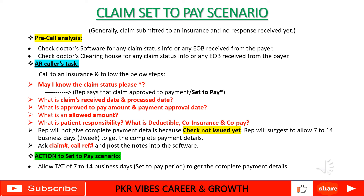In that case, take your claim number and call reference number, and put all the information given by the representative into your AR comments. Post those notes into your respective software. Note: in this scenario, partial payment information will be given by the insurance representative — not complete payment details. The action is to allow 14 to 15 days depending on the payer, then follow up on the claim, or you will receive a paid EOB and post the payment into your system.